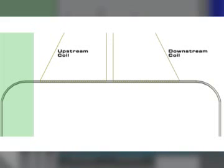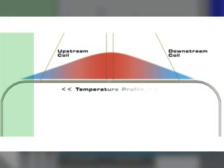When there is no gas flowing, the capillary tube temperature profile looks like this, even and balanced, hotter in the middle and cooler on the ends.